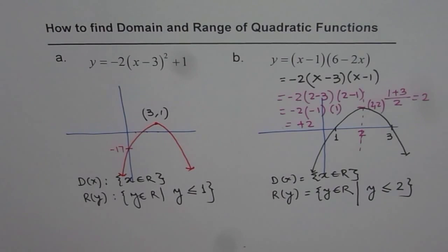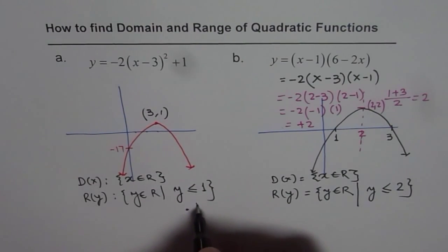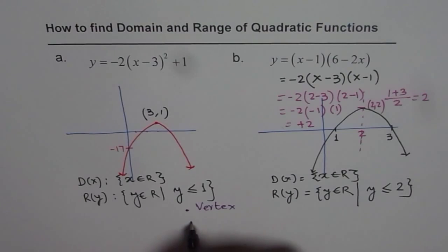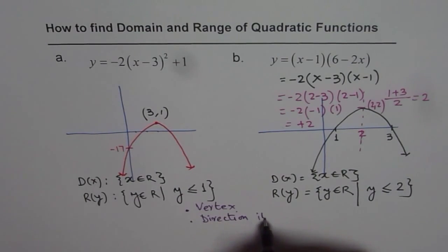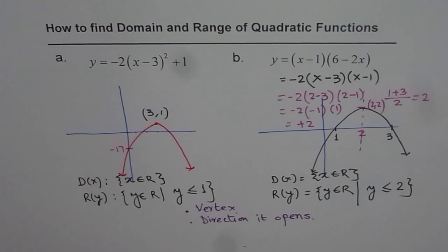The key technique is to find the vertex and the direction of opening for any parabola. We need two things: the vertex and the direction it opens. For a parabola, the domain is always all real numbers, so that is not a critical concern. The range is restricted and depends on the vertex and the direction of opening. I hope that helps. Thank you and all the best.